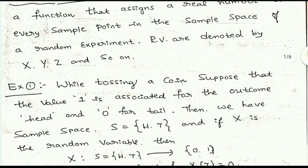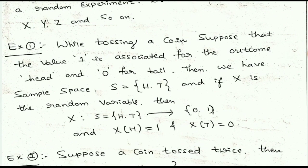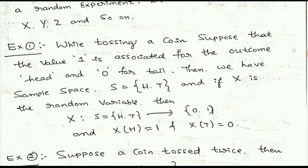Let us try to understand this definition with two simple examples. First, while tossing a coin, suppose the value 1 is associated for the outcome head and 0 for tail. If head comes I'll take the number as 1 — it is my wish, you can take any number. If tail comes I'll take it as 0. The sample space, which is all possible cases when you toss a coin, is S = {H, T}.